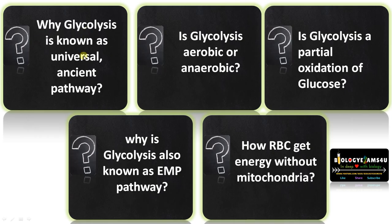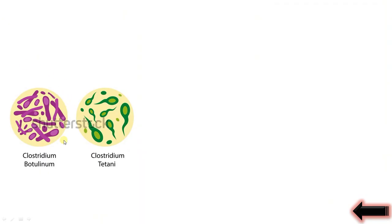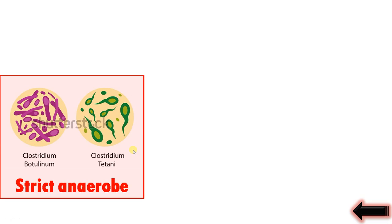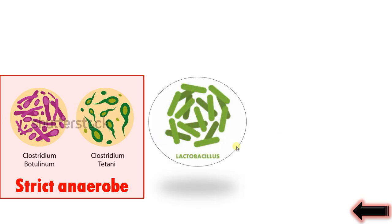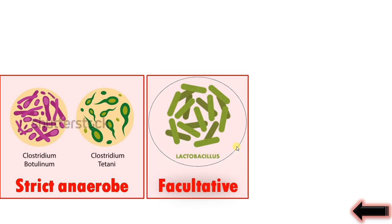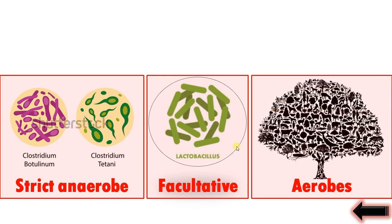Question number one: why is glycolysis known as a universal ancient pathway? This is Clostridium botulinum, which causes botulism, and this is Clostridium tetani, which causes tetanus. Both these organisms are strict anaerobes, meaning they cannot live in the presence of oxygen. This is Lactobacillus, the common species in milk — a facultative organism that is generally anaerobic but can tolerate oxygen.